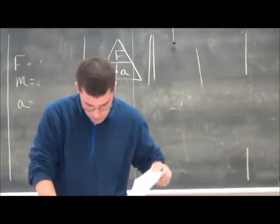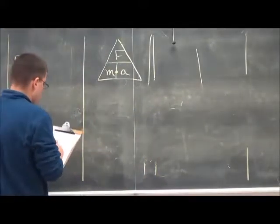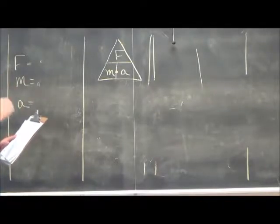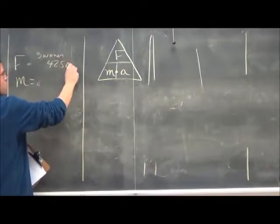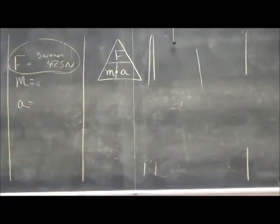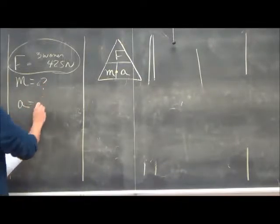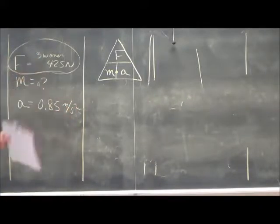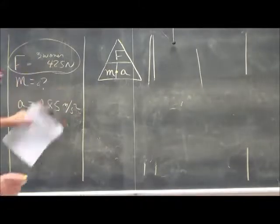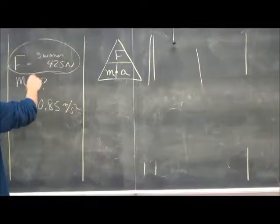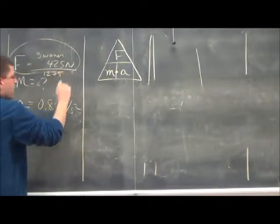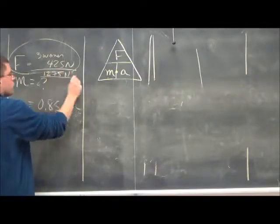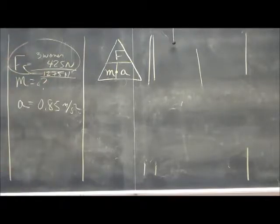Let's do number five. Three women push a stalled car. Each woman pushes with a 425 newton force. Write this down. Three women with 425 newtons of force. Be careful. What is the mass if we accelerate at 0.85 meters per second squared? A lot of kids will just assume the force is 425 newtons, but you've got to read and take your time. We've got three women pushing in the same direction, so it's 3 times 425. The total force is going to be 1,275 newtons of force. That's the force. The three combined. Each one contributes that much force.